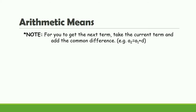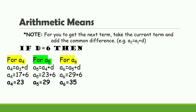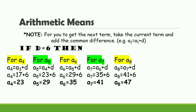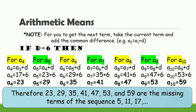Note: to get the next term, take the current term and add the common difference. For example, a sub 2 is equal to a sub 1 plus d. With d equal to 6: a sub 4 is 17 plus 6 equals 23; a sub 5 is 23 plus 6 equals 29; a sub 6 is 29 plus 6 equals 35; a sub 7 is 35 plus 6 equals 41; a sub 8 is 41 plus 6 equals 47; a sub 9 is 47 plus 6 equals 53; and a sub 10 is 53 plus 6 equals 59. Therefore, 23, 29, 35, 41, 47, 53, and 59 are the missing terms of the sequence 5, 11, 17.